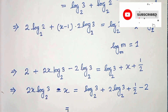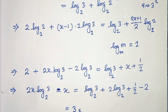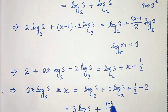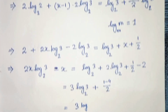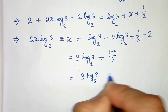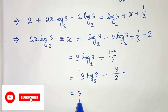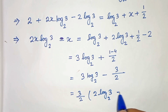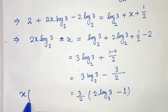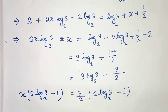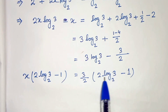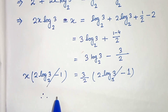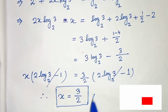Combining: 2 log 3 plus log 3 gives 3 log of 3 to base 2, and one half minus 2 is 1 minus 4 over 2 which is negative 3 over 2. So the right side is 3 log of 3 to base 2 minus 3 over 2, and we factor out 3 over 2. On the left side we take common x, giving x times 2 log of 3 to base 2 minus 1. Since 2 log 3 minus 1 appears on both sides, they cancel, and we get x equals 3 over 2. This is our solution. Thanks for watching.